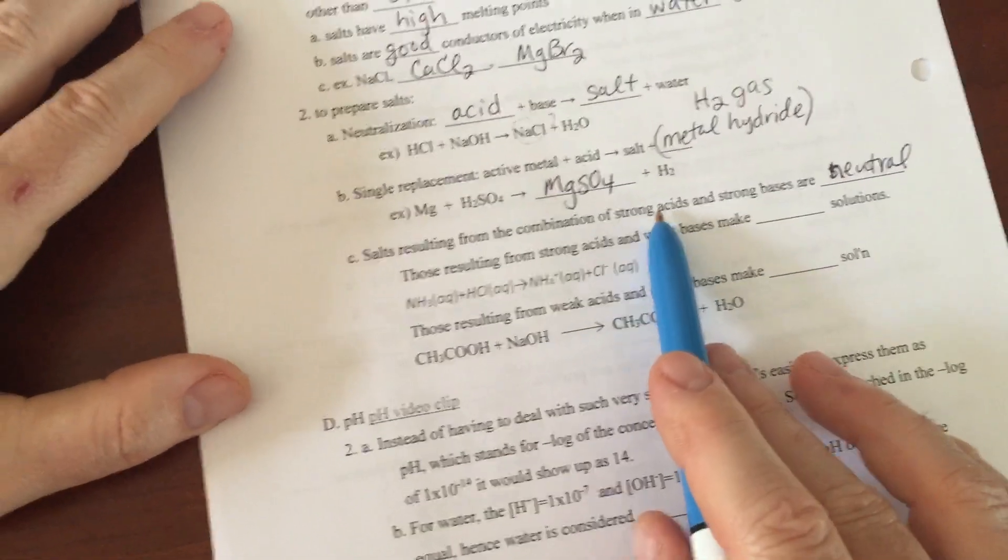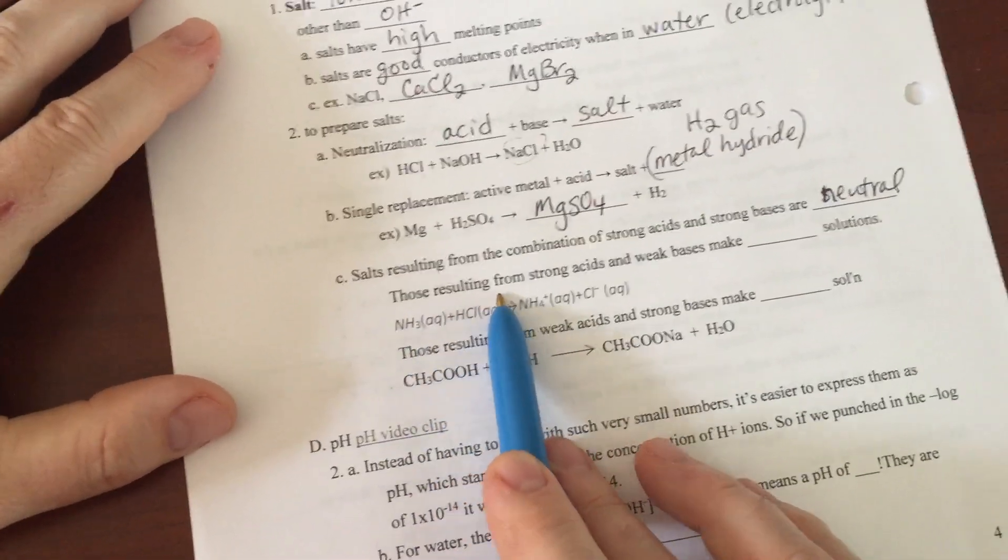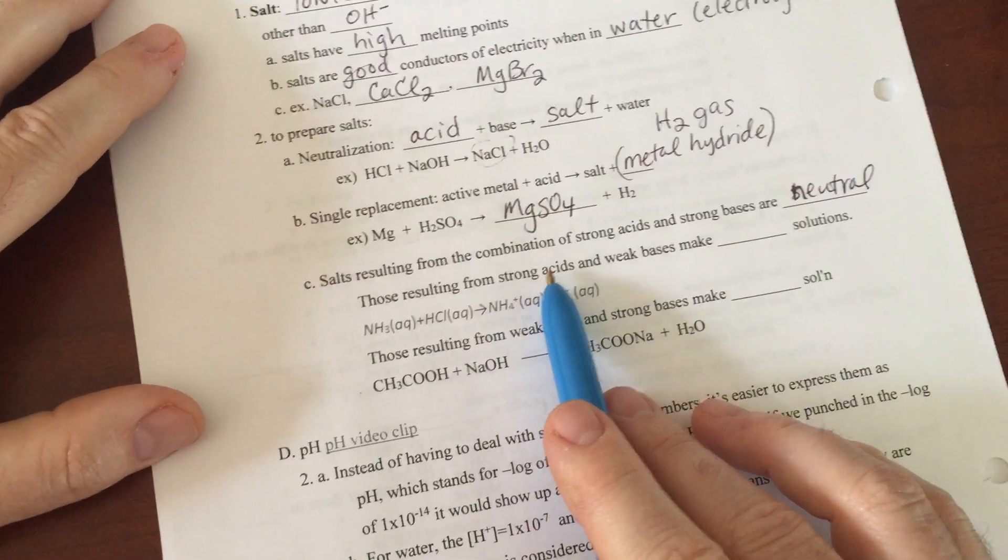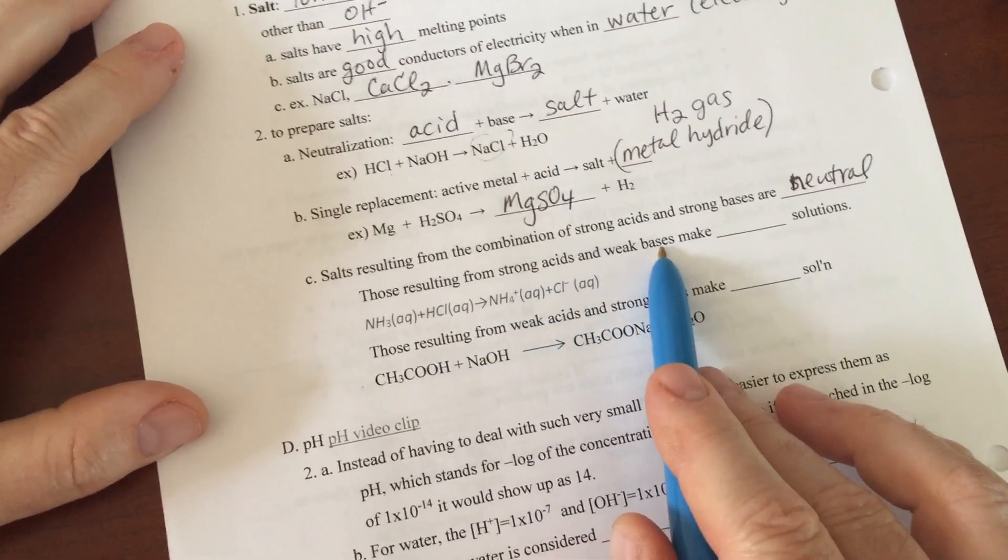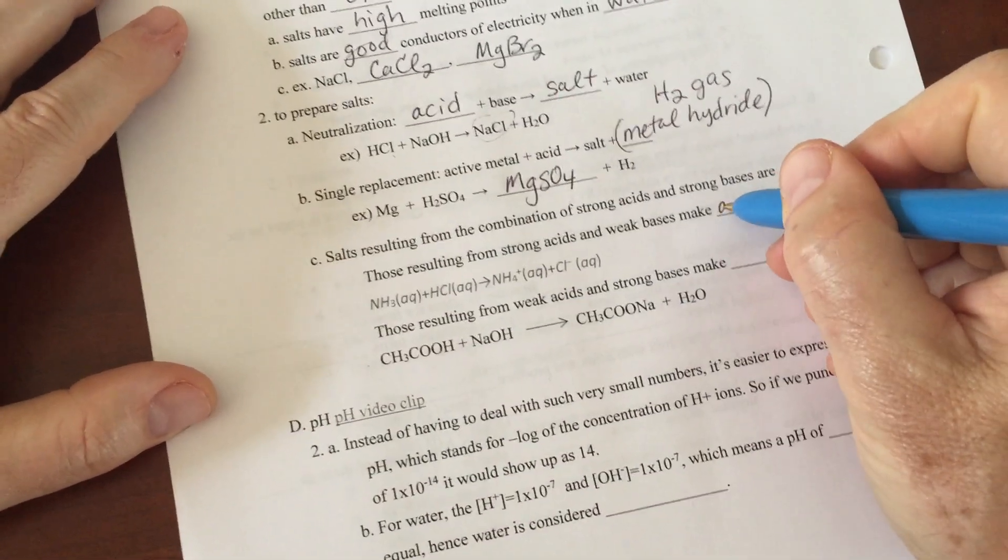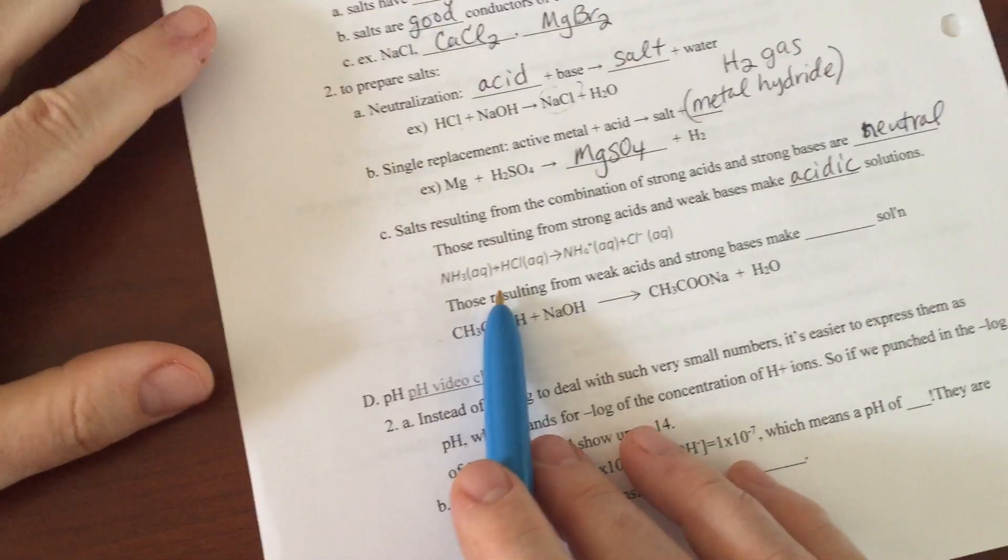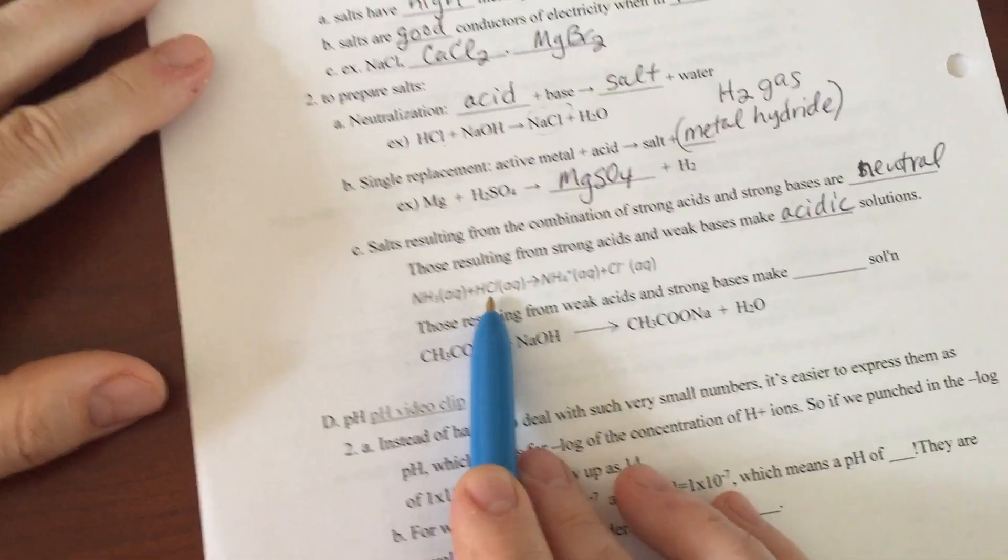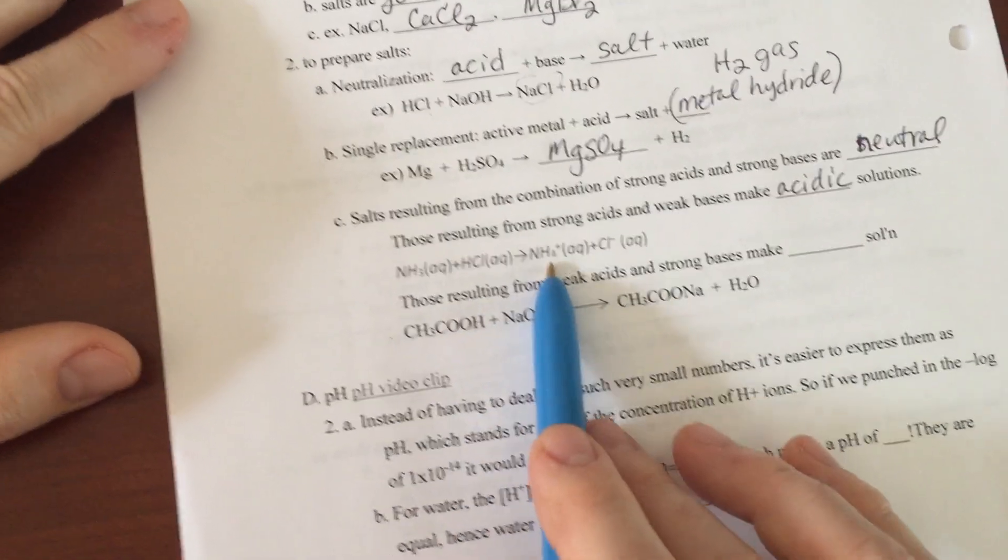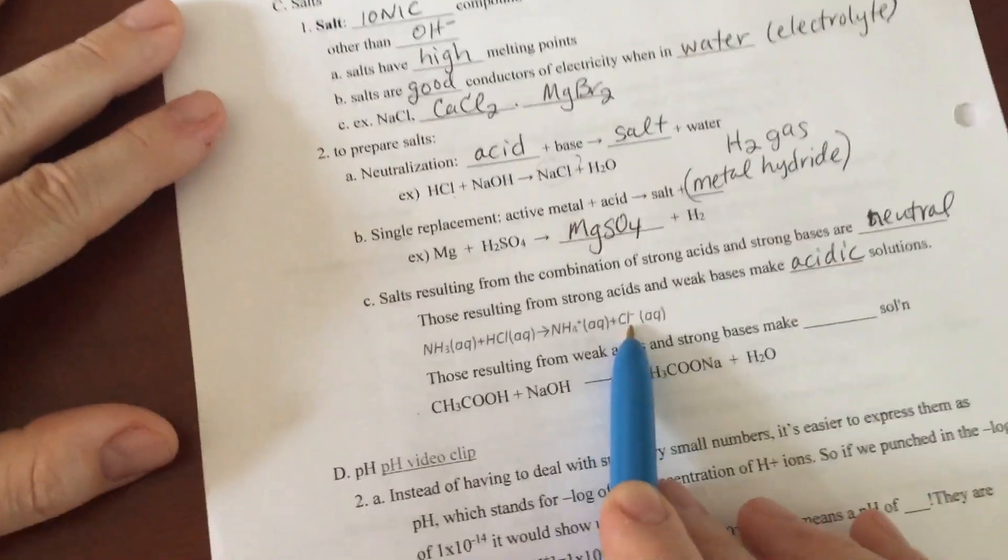Those resulting from strong acids and weak bases make, well you could just think about it: if you got a strong acid and a weak base, this is going to overpower the base so it becomes acidic. An example here is a weak base of ammonia and hydrochloric acid, which is a pretty strong acid. You end up with a combination of ammonia and chloride, which is somewhat acidic.